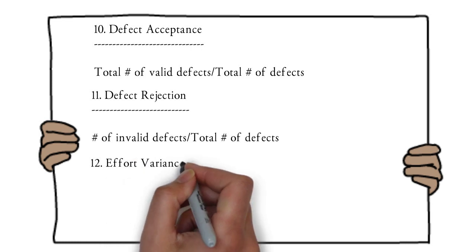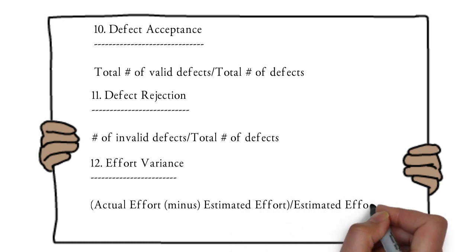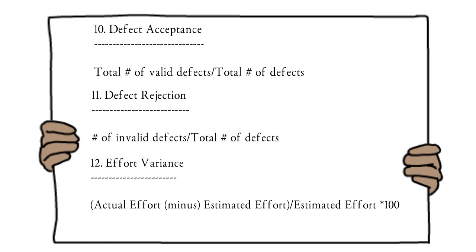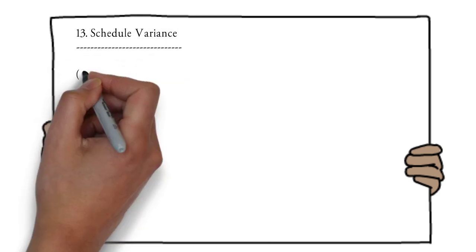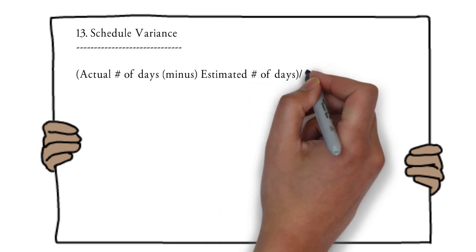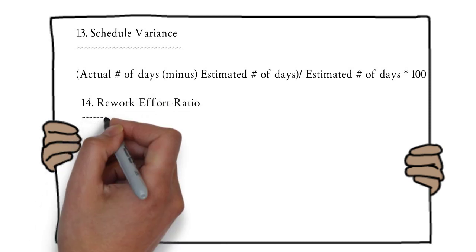During project planning we estimate effort required to complete the project, but actual effort may vary. Effort variance = ((actual effort − estimated effort) / estimated effort) × 100. Similarly, schedule variance = ((actual number of days − estimated number of days) / estimated number of days) × 100. These give the percentage variance in effort and schedule respectively.